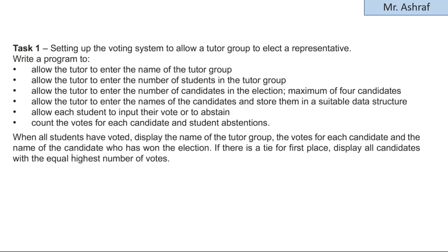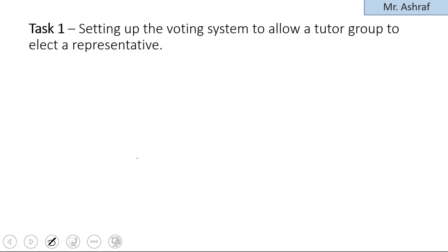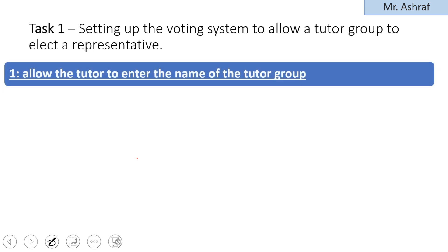In the other situation, if there is a tie for first place — meaning two or more candidates have an equal number of votes — display all the candidates who have the equal highest number of votes. We explained how to handle this in the previous video, and in this video we'll go through each bullet point one by one.